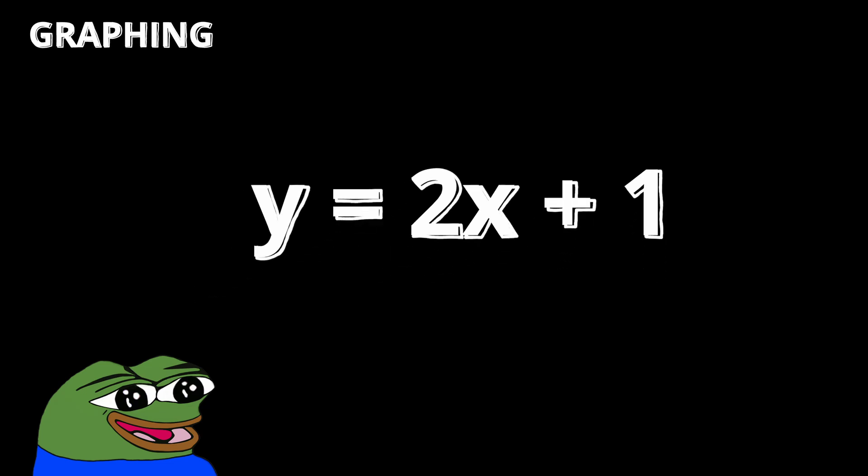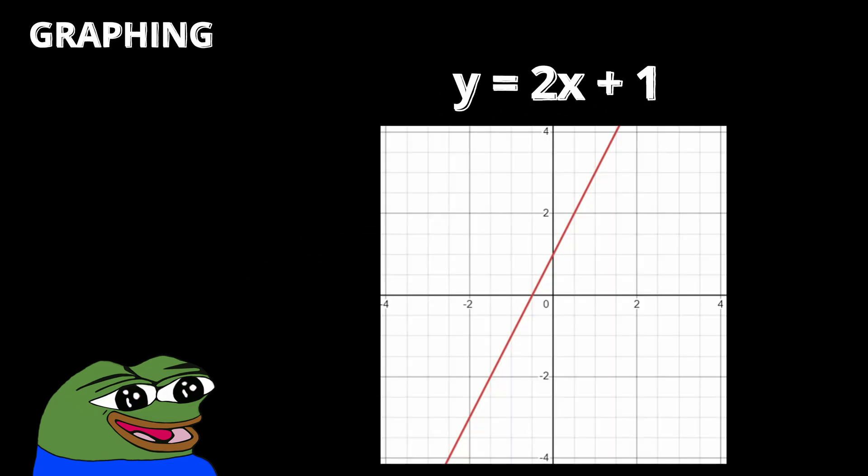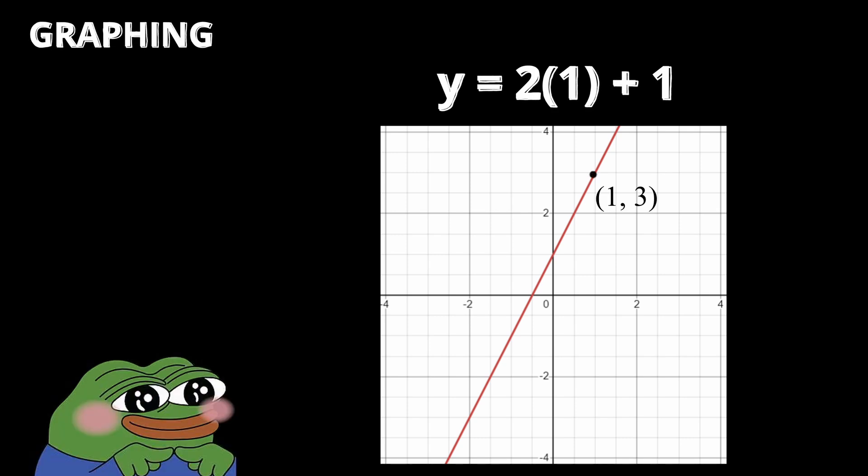If we graph an equation like y is equal to 2x plus 1, we can substitute x with different numbers and observe a pattern through the line in our graph. For example, if you substitute x equals 0, your y value would be 1. Or if you substitute x equals 1, your y value would be 3, and so on and so forth.